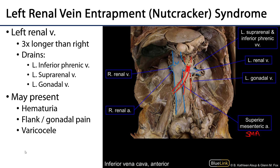On the left side, structures are further from the inferior vena cava than their counterparts on the right. We see left inferior phrenic veins oftentimes combining with left suprarenal veins, forming a common trunk draining into the left renal vein. Left gonadal veins also drain into the left renal vein. So the left hemidiaphragm inferior surface, left suprarenal gland, and left gonad — on the right side their respective veins drain directly into the IVC, but on the left side they drain into the left renal vein, which is located between the SMA and the abdominal aorta.